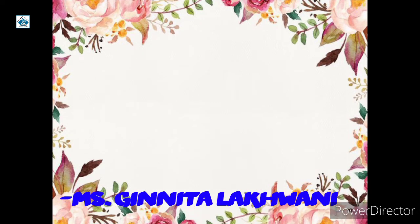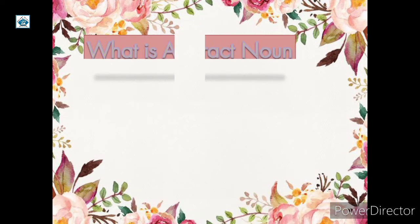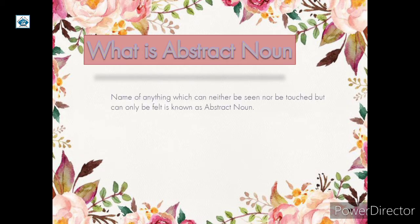So, what is abstract noun? The name of anything which can neither be seen nor be touched but only be felt is known as abstract noun. Aisi cheezein jo na aap dekh sakte ho, na touch kar sakte ho, but sirf mehsoos kar sakte ho — un name ya words ko bolte hain abstract noun.